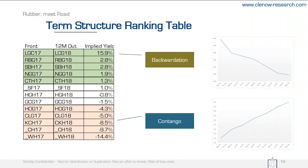The table that we calculate on a weekly basis will look like this. Just calculate one year out. When I made this — in spring of 2017 — it picks the contract exactly one year out and calculates the implied yield. The top five in backwardation we go long; the top five in contango at the bottom we go short.